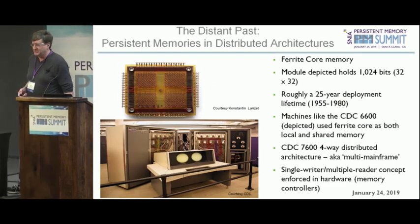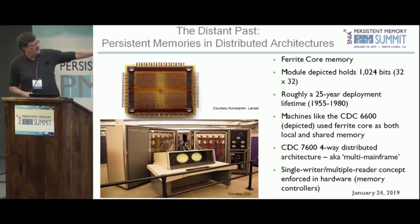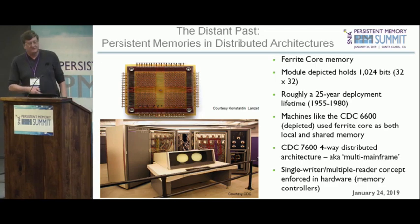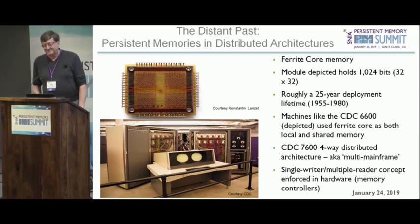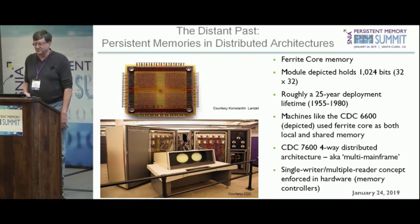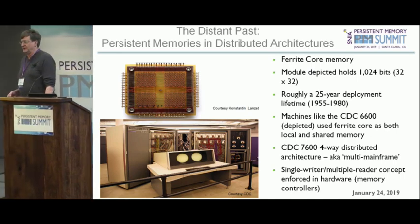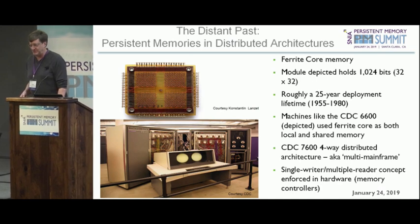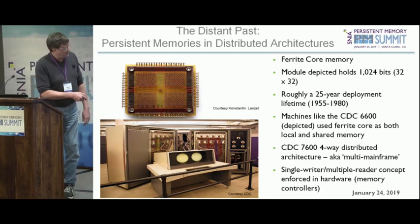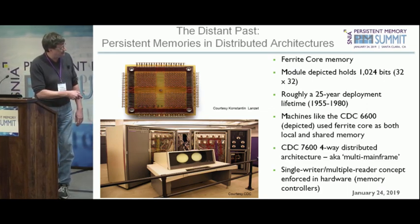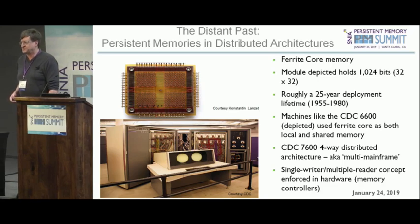Let's set the Wayback Machine to 1963. Can you identify the Persistent Memory Module on top? There is a hint on the slide — that is a ferrite core memory module. It is a whopping 32 bits by 32 bits, so that would be 1,024 bits — 1k bit of ferrite core. And guess what? That is a form of Persistent Memory.